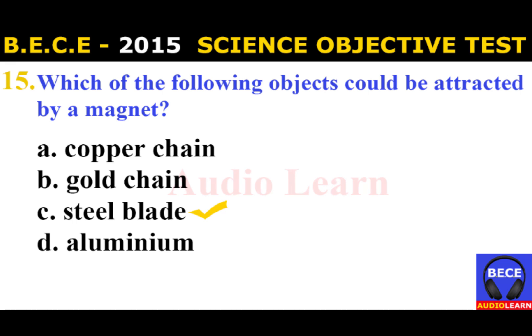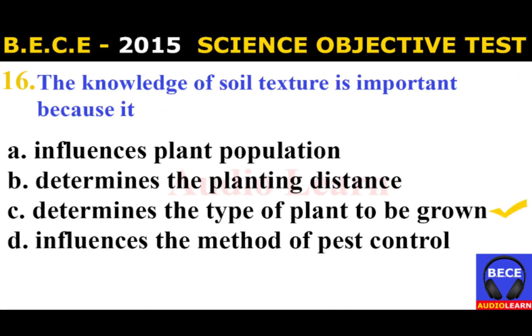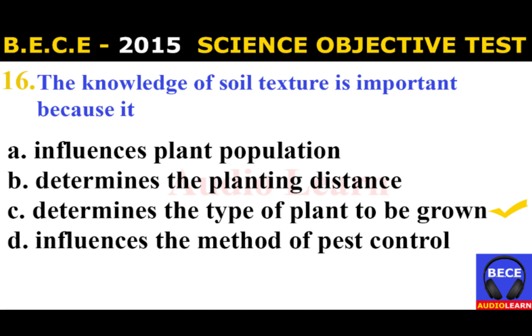Number 15: Which of the following objects could be attracted by a magnet? A. Copper chain, B. Gold chain, C. Steel blade, D. Aluminium spoon. The answer is C. Steel blade. The object that could be attracted by a magnet is a steel blade.